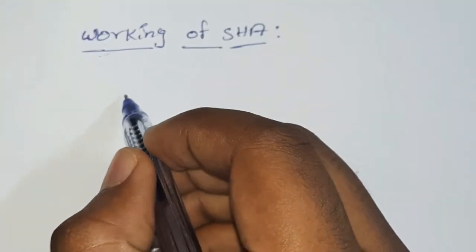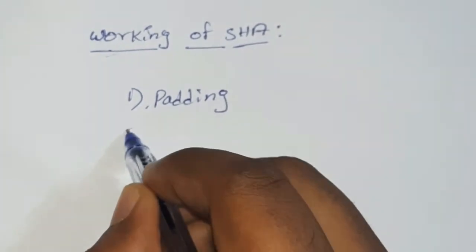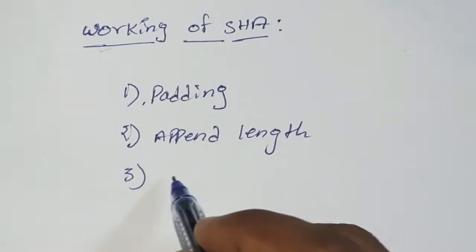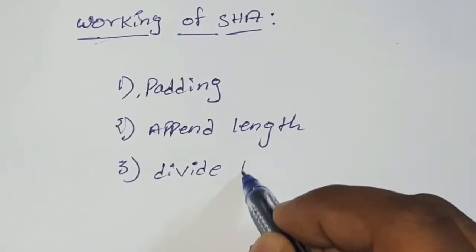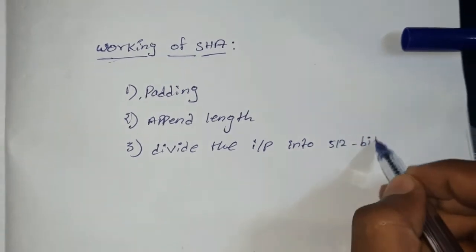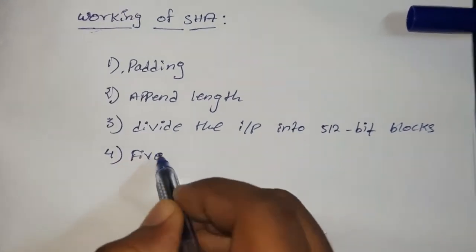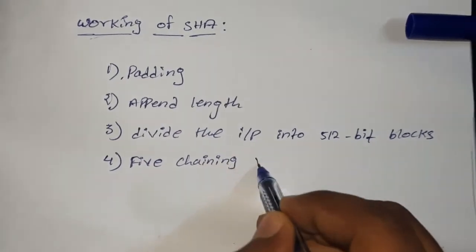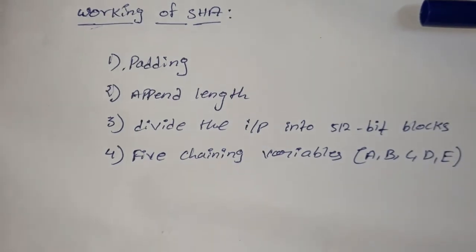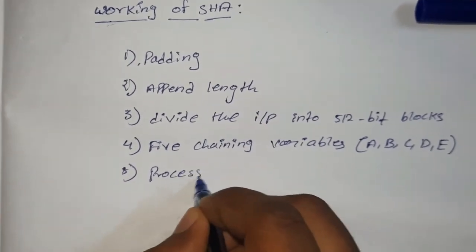Coming to the working of secure hash algorithm. There are five steps. Padding. Append length. Divide the input into 512-bit blocks. There are five chaining variables: A, B, C, D and E. And the last step is process block and output.